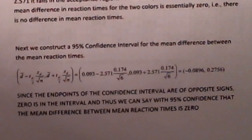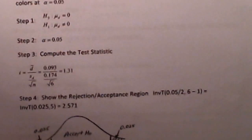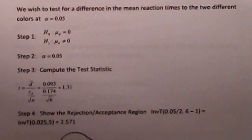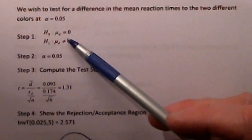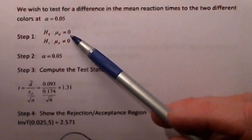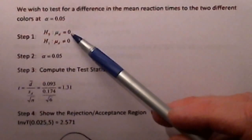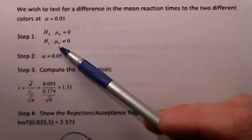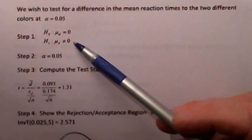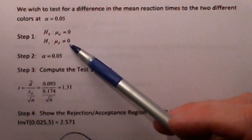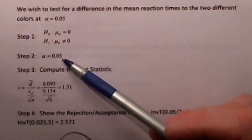Now that we've computed those values, we can test the following hypotheses. The null hypothesis says that the mean difference between the reaction times for the two different colors, blue and red, is equal to zero. The alternative hypothesis says the mean difference is not equal to zero. The claim for this test is to see if there is indeed a difference between the reaction times, so the claim will be the alternative hypothesis. We're going to test at 5%, so alpha equals 0.05. This will be a two-tailed test.